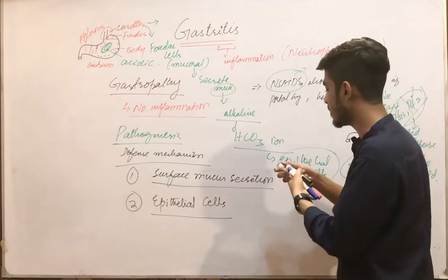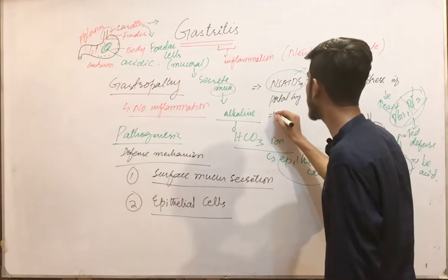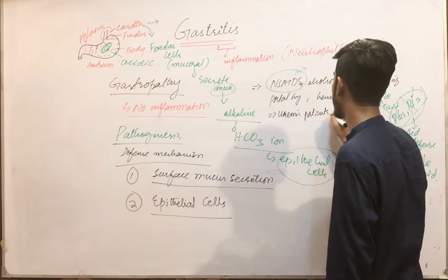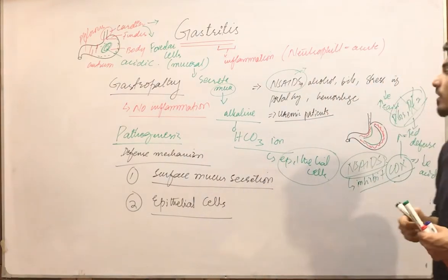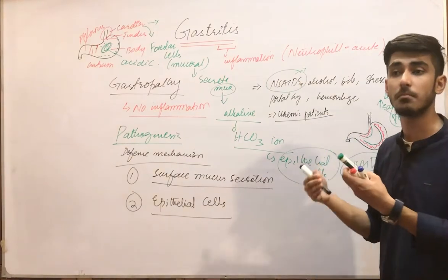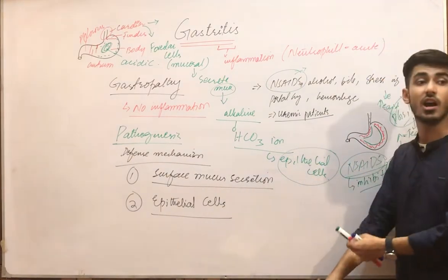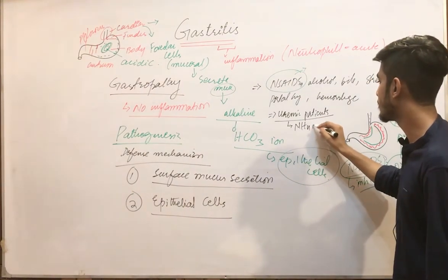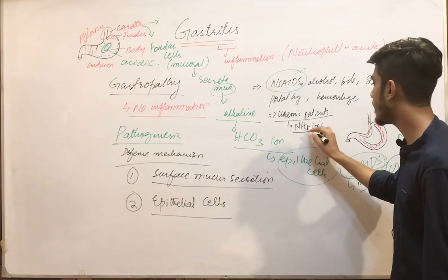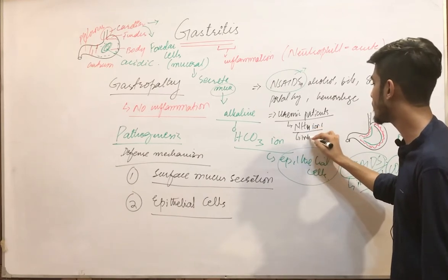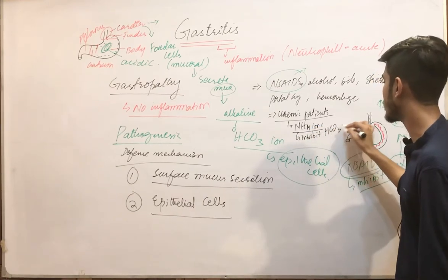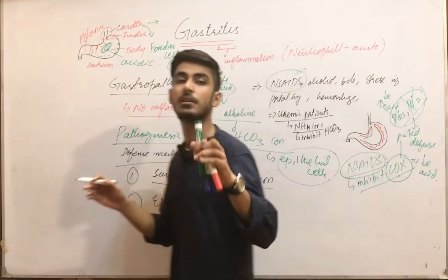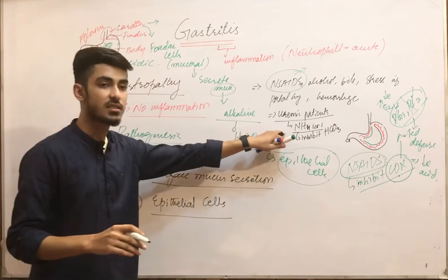Another cause involves uremic patients, in whom urea levels in the blood are very high. In these patients, ammonium ions inhibit bicarbonate ion secretion, which compromises the mucosal defense and may lead to gastritis.